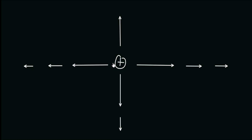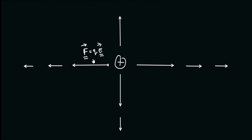Let's say we have a point charge at the origin. This charge will set up an electric field in the space around it. We can represent that electric field by adding electric field vectors to each point in space. The length of the electric field vector tells the magnitude of the electric field at that point, and the direction tells the direction in which a force would act on a hypothetical positive test charge placed at that point, since force equals charge times the electric field vector. Therefore, electric field and force vectors point in the same direction.